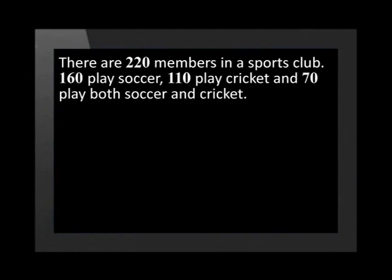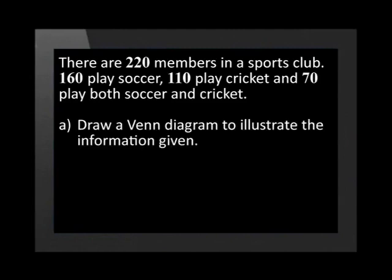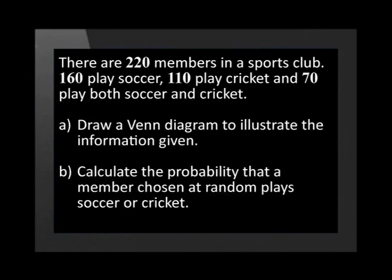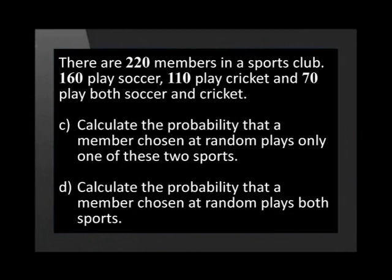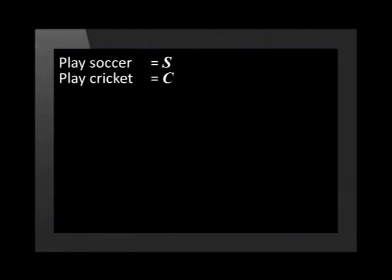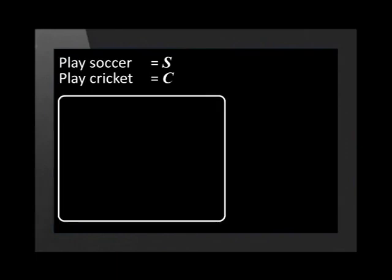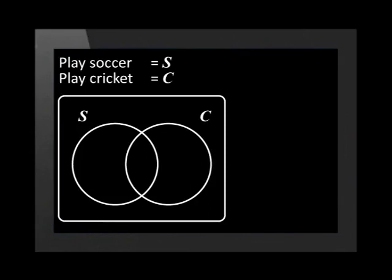Now that we've revised the basic Venn diagrams, let's use this knowledge to do an example. There are 220 members in a sports club: 160 play soccer, 110 play cricket, and 70 play both soccer and cricket. Draw a Venn diagram to illustrate the information given. Let S be the event members who play soccer and let C be the event members who play cricket. We draw a rectangle to include all outcomes in the sample space, circle S for soccer and circle C for cricket. We know that some members play both sports, so the circles must intersect.